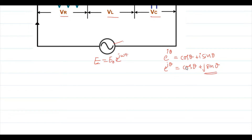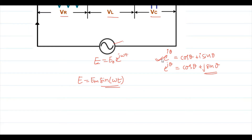Any complex number can be represented in exponential form. Previously we considered EMF as E = E_m sin(ωt) or cos(ωt). But since it is sinusoidal, complex numbers can also be written in exponential form, which contains both a real part and an imaginary part. Here we use the total quantity E = E₀ e^(jωt), where E₀ is the peak value and E is the instantaneous voltage.